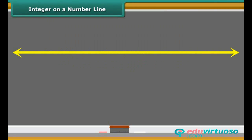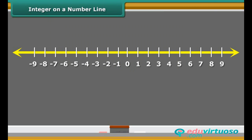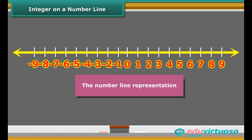This figure represents a line marked with some points at equal distance. A point on it is marked as zero. Points to the right of zero are positive integers. Points to the left of zero are negative integers and are marked minus 1, minus 2, minus 3, and so on. This type of representation of integers is called the number line representation.